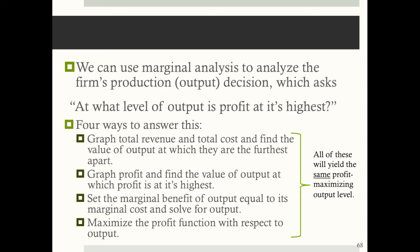Our focus right now is to set the marginal benefit of output equal to its marginal cost and solve for the profit-maximizing level of output — the optimal output Q*. Next, we'll see how we can maximize the profit function with respect to output. Either approach will yield the same exact optimal output level.